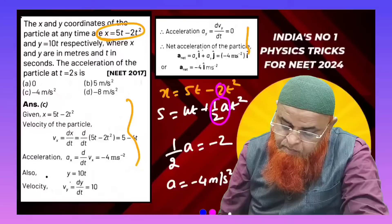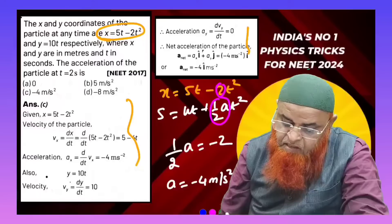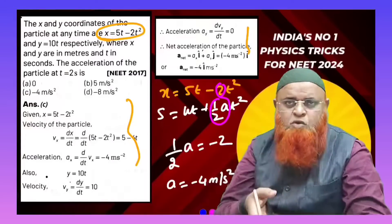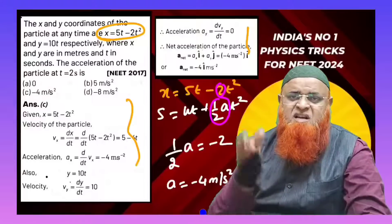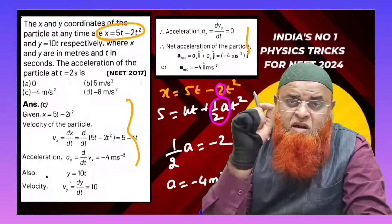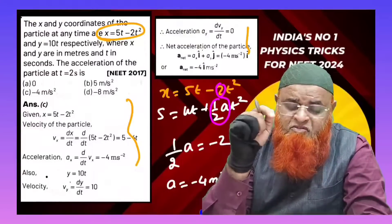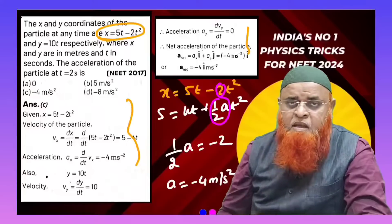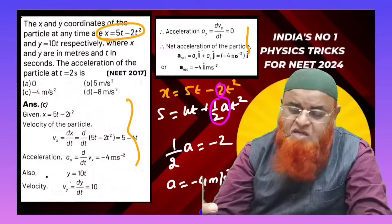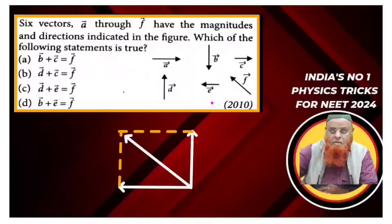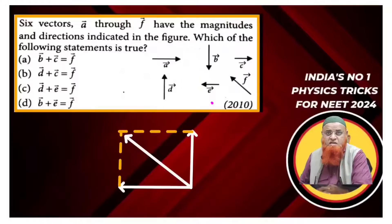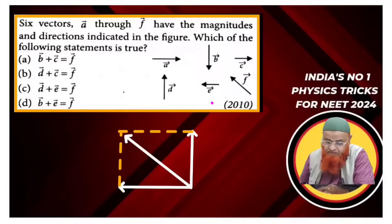Comparing the two equations directly gives a = -4 m/s². Such a simple result — there is no need to do differentiation and integration, which is especially troublesome for medical students. This shortcut makes it super simple.